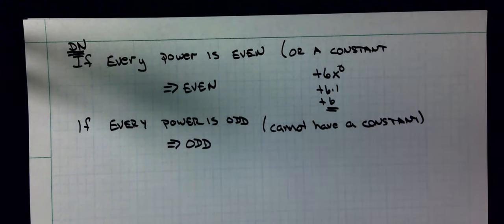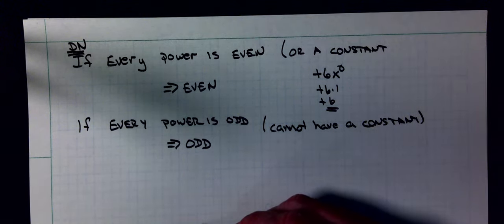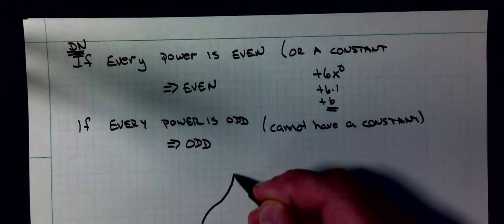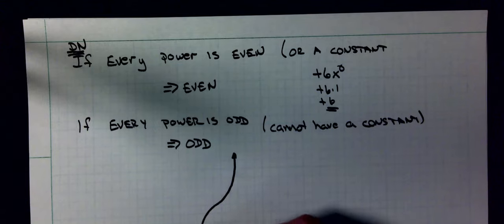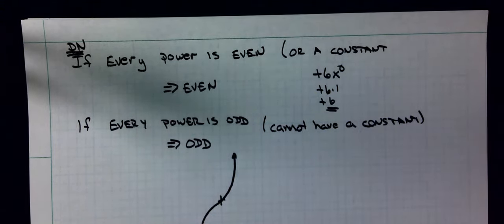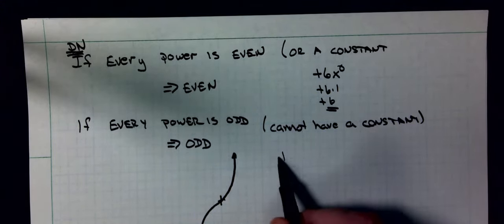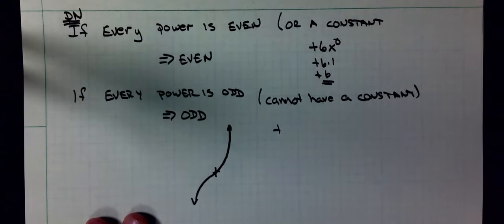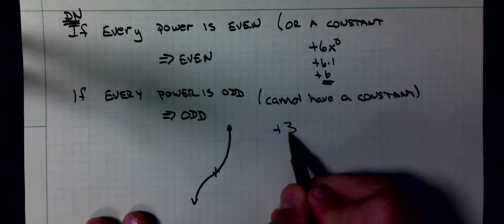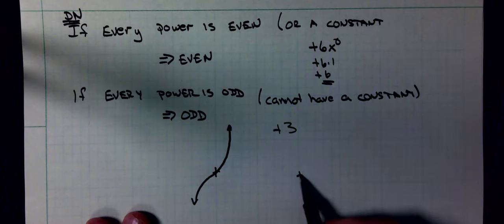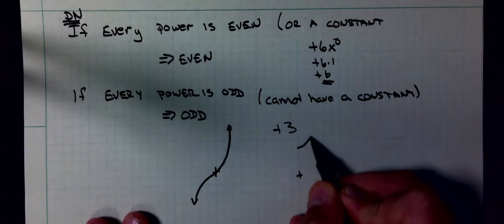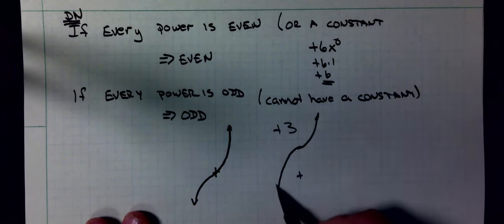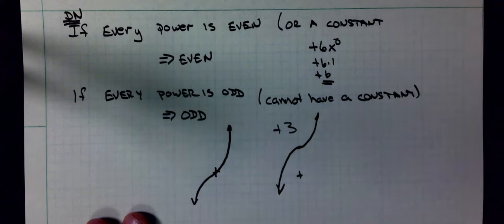Because remember what does that constant do to the graph of the function? Actually moving that up. If I start out with an x^3 graph that goes through the origin, I can rotate it 180 degrees and I get the same graph. That's odd symmetry. Let's say I do it plus 3. It no longer has that rotational symmetry about the origin.